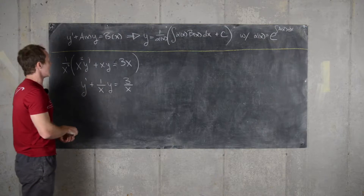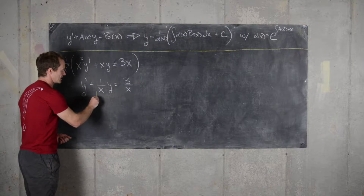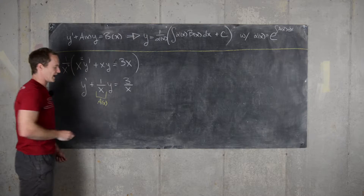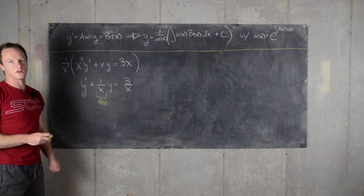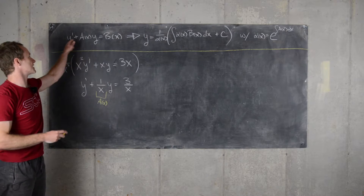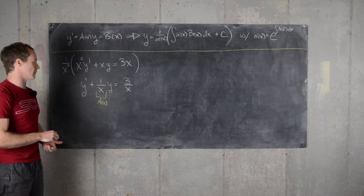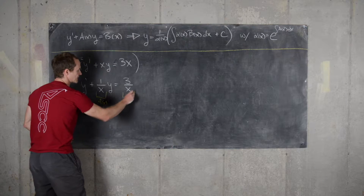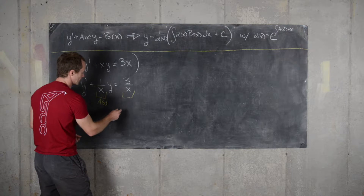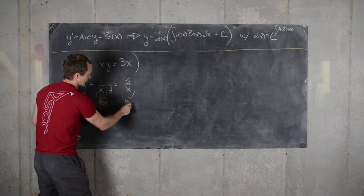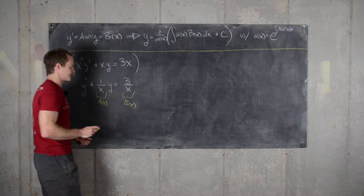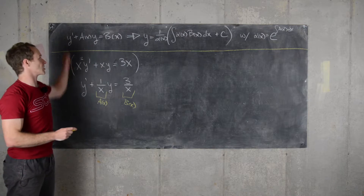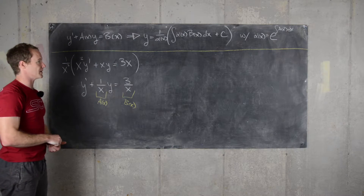Now we can identify that 1 over x is playing the role of a of x in our general form, and 3 over x is playing the role of b of x in our general form.